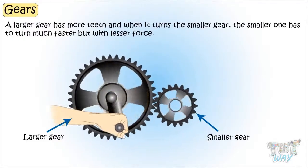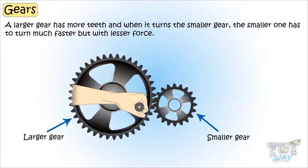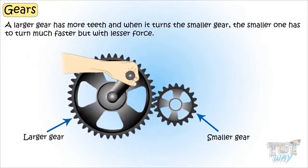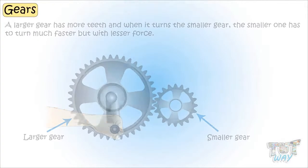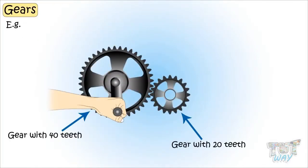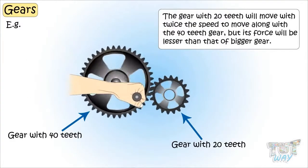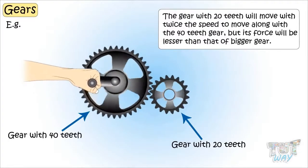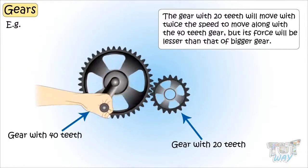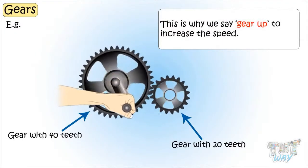The smaller gear has to turn around much faster but with lesser force. For example, if a gear with 40 teeth turns a gear with 20 teeth, the gear with 20 teeth will move with double the speed to keep up with the 40-teeth gear, but its force will be lesser than that of the bigger gear.